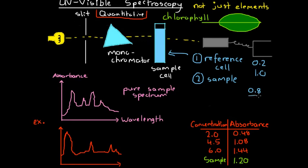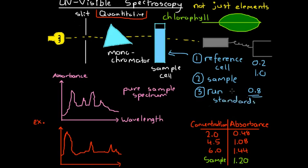So we've used our reference to set a new zero point, and the absorbance of our sample is 0.8 — that's the value we're going to use. Next, just as in a few other forms of analysis, we run standard solutions of known concentrations of chlorophyll, see their absorbance, and from there we create a graph and analyse the concentration of chlorophyll in our leaf sample.